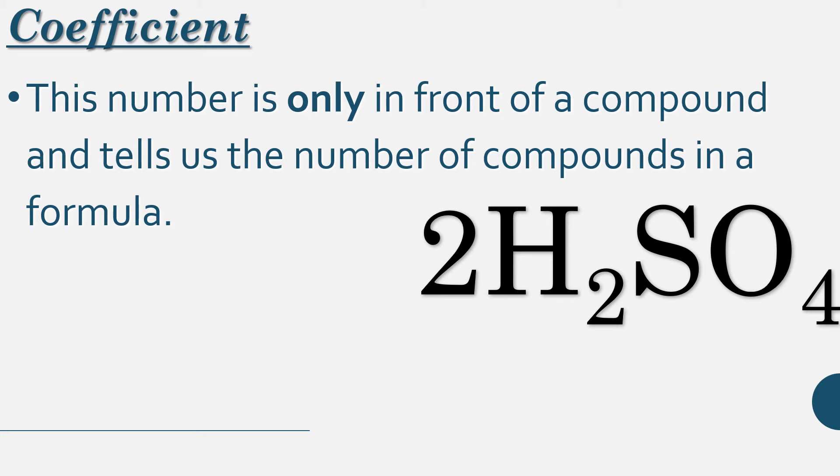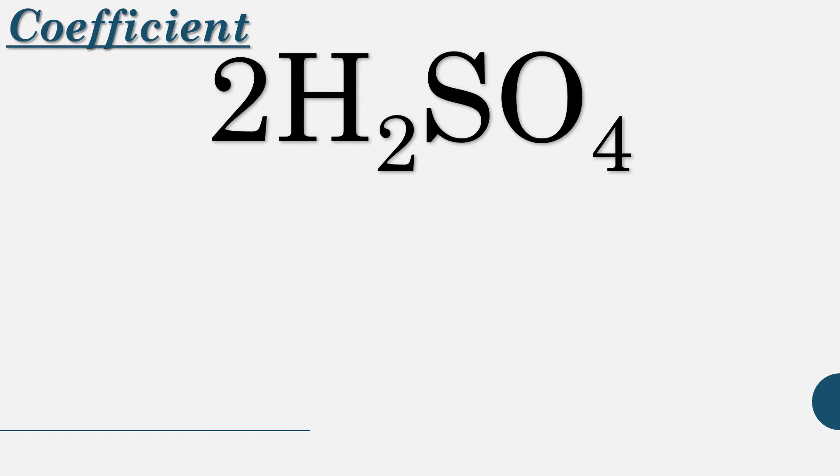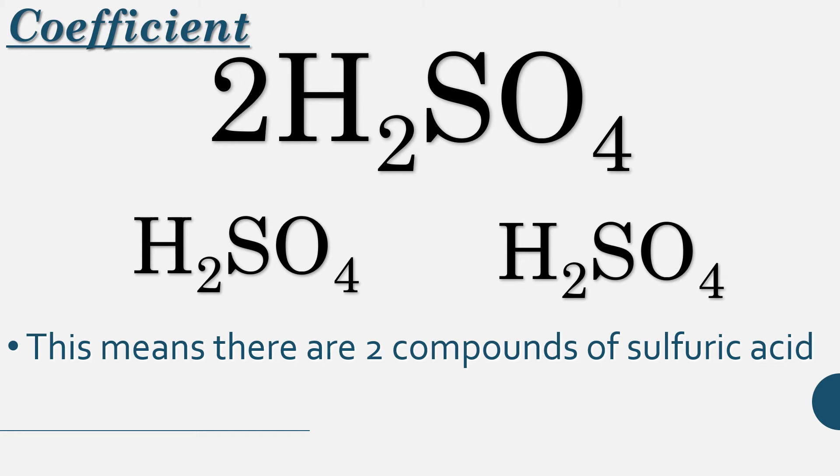Now let's add another piece to this puzzle. Right here we have a coefficient. This number is only in front of a compound. You will never find it in the middle of a compound or anything like that. It is only at the front. The purpose of this is to tell us the number of compounds in a formula. So essentially, if I have 2H2SO4, what that means is that there are 2 compounds of sulfuric acid. That 2 means there are 1, 2 of them. And so that's what a coefficient means.